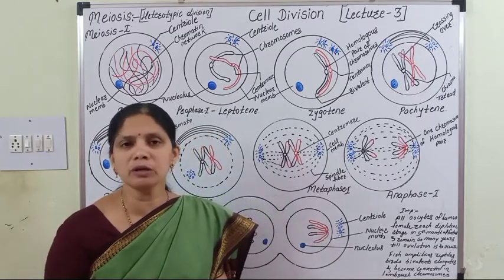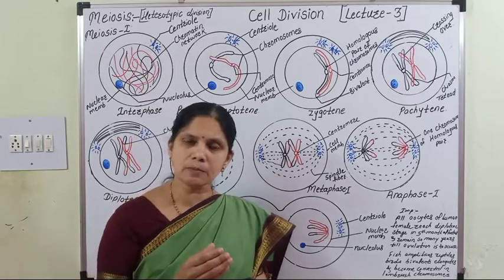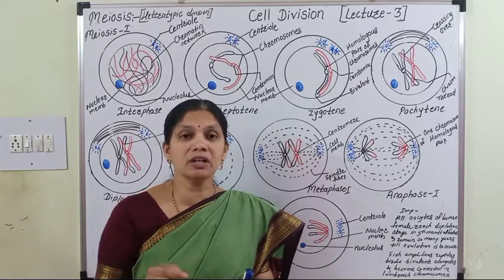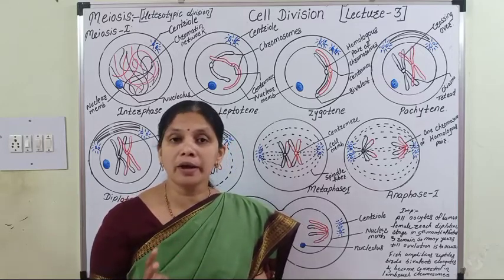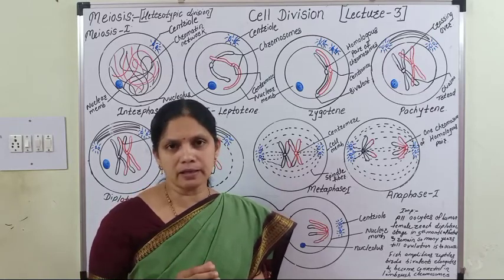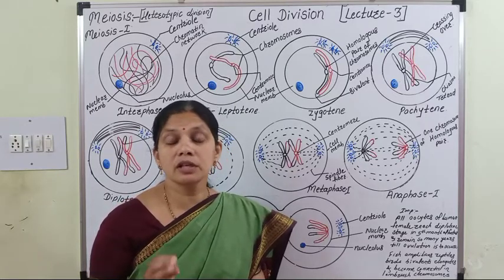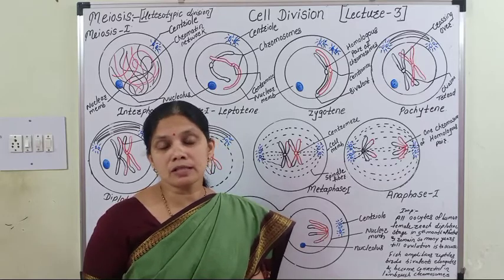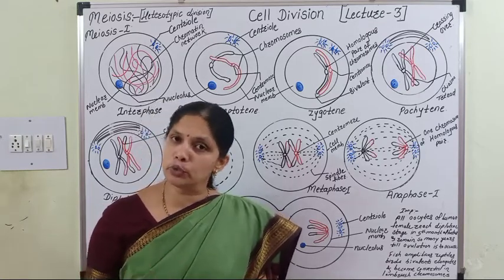For example, in human beings, whenever there is spermatogenesis, this process takes place in the germinal epithelial cells of the seminiferous tubules. After meiosis, from one diploid germinal epithelial cell, four haploid sperm cells are formed. The germinal epithelial cell has 46 chromosomes, but the sperm has only 23 chromosomes — reduced to half.